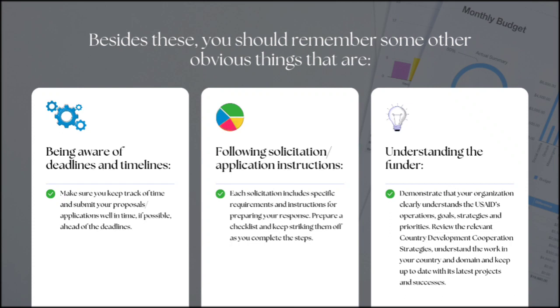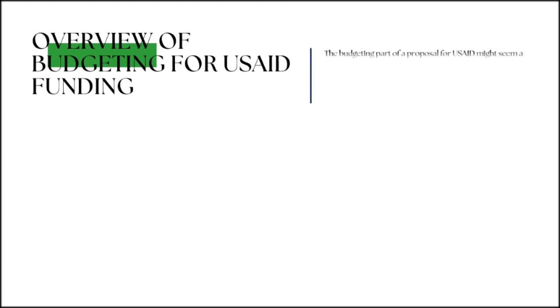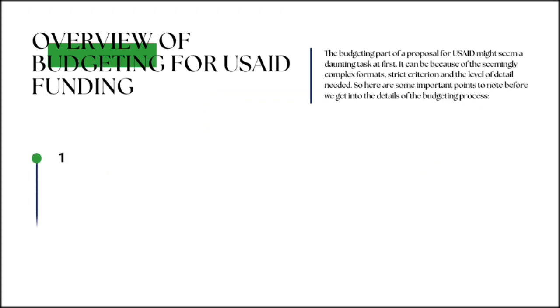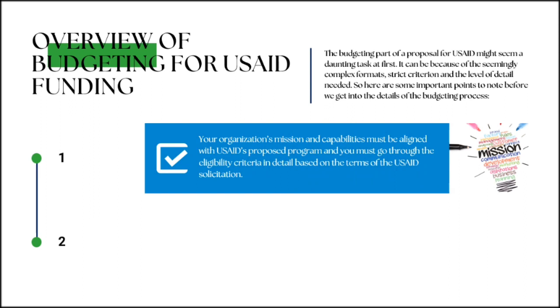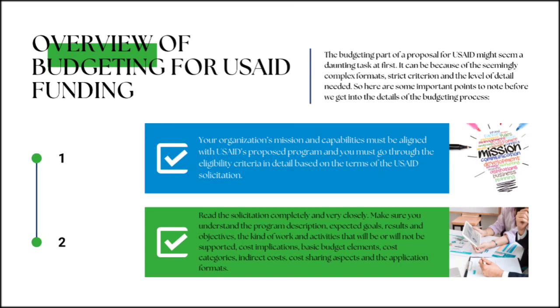Let's now discuss the overview of budgeting for USAID funding. The budgeting part of a proposal for USAID might seem a daunting task at first, because of the seemingly complex formats, strict criteria, and the level of detail needed. Here are some important points to note before we get into the details. First, your organization's mission and capabilities must be aligned with USAID's proposed program, and you must go through the eligibility criteria in detail based on the terms of the USAID solicitation.